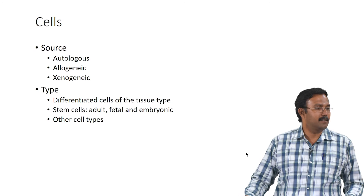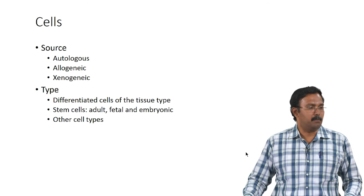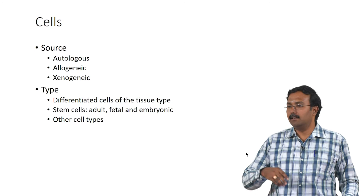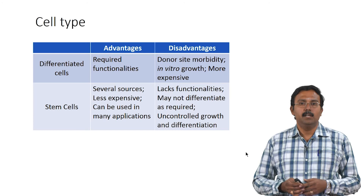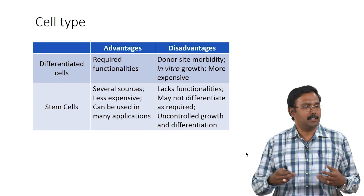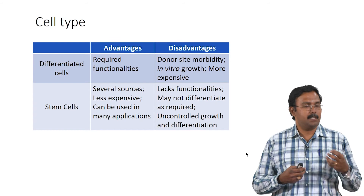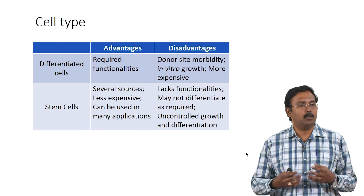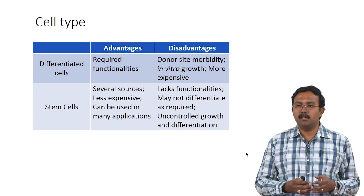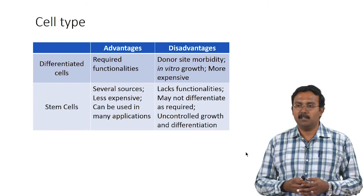Another disadvantage is cancer — uncontrolled growth can lead to teratoma formations, especially with embryonic stem cells. You can actually have an issue where it forms into a teratoma, and that can be a whole new complication. So differentiated cells give required functionality, and stem cells can be differentiated to specific functionalities, but how you differentiate them in vivo is the challenge. You would have to justify why you want to use a stem cell for a given application — do not just use one because it sounds cooler.